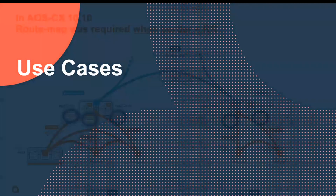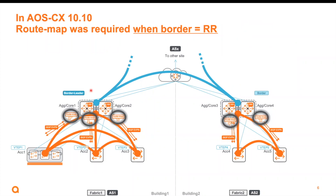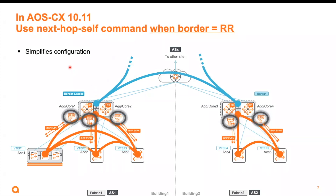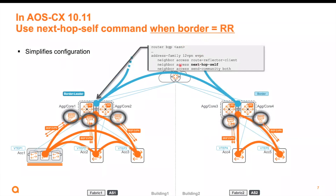Use cases. In AOS-CX 10.10, if you have this environment — building one in fabric one, building two in fabric two — you have the aggregation switch which also functions as the border and route reflector. You will need to configure route maps towards your access VTAPs, requiring many lines of configuration when you set the next hop. Now in 10.11, with the next hop self command, this will help simplify configuration. Under EVPN for your access VTAPs, you just need to have the next hop self command.